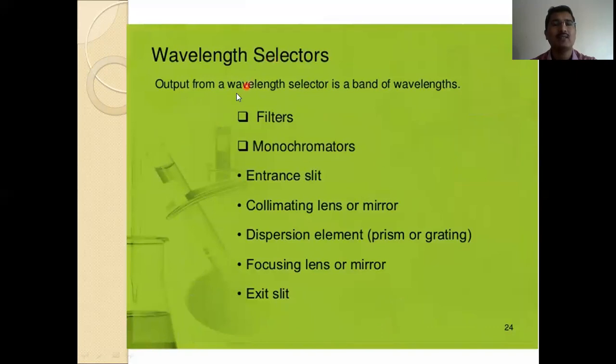Wavelength selectors. Output from wavelength selector is a band of wavelengths. Filter, monochromator. Monochromator components: collimating lens or mirror, dispersion element, prism or grating, focusing lens or mirror, exit slit.